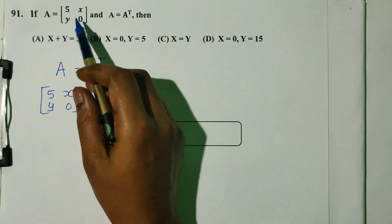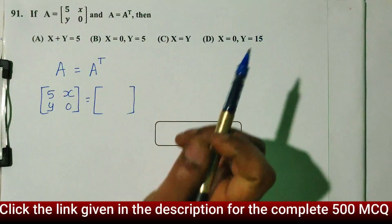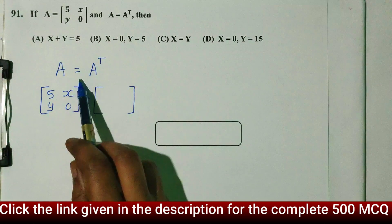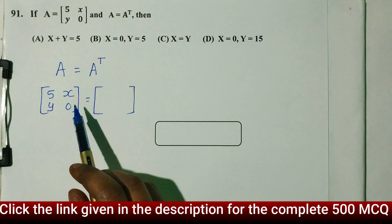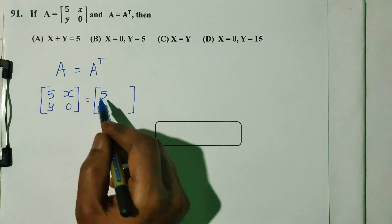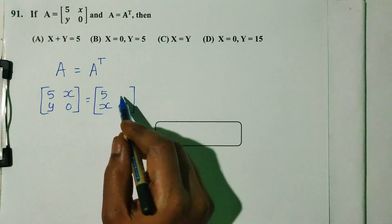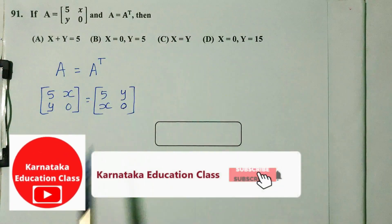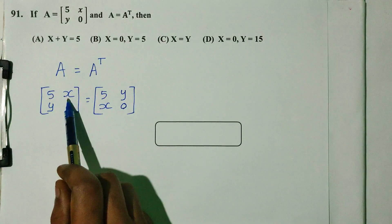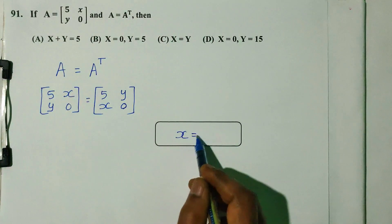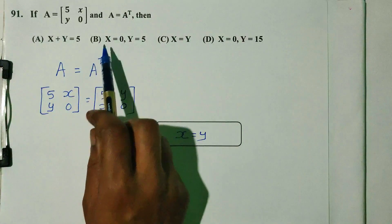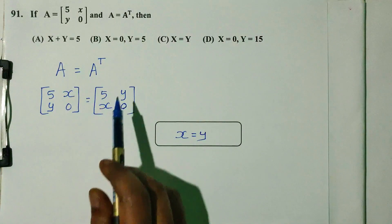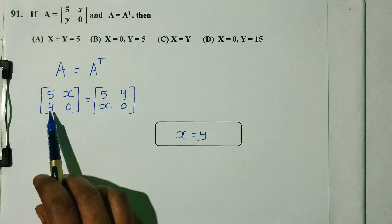Question number 91. If A is equal to [5, x; y, 0] and A is equal to A transpose, then the first A matrix is [5, x; y, 0]. The transpose has rows and columns interchanged. Observing, x in position equals y, so x equals y. Also x equals 0 and x equals 5, so y equals 5.